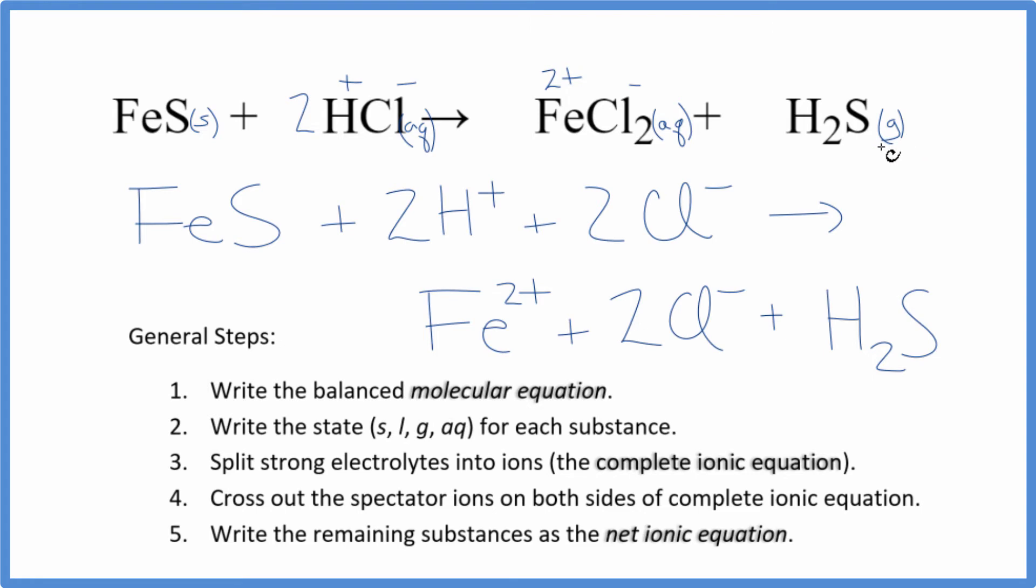If it were aqueous, if we said this was dissolved, this is a weak acid when it's dissolved in water. So we wouldn't split a weak acid apart either. So this is the complete ionic equation for FeS plus HCl.